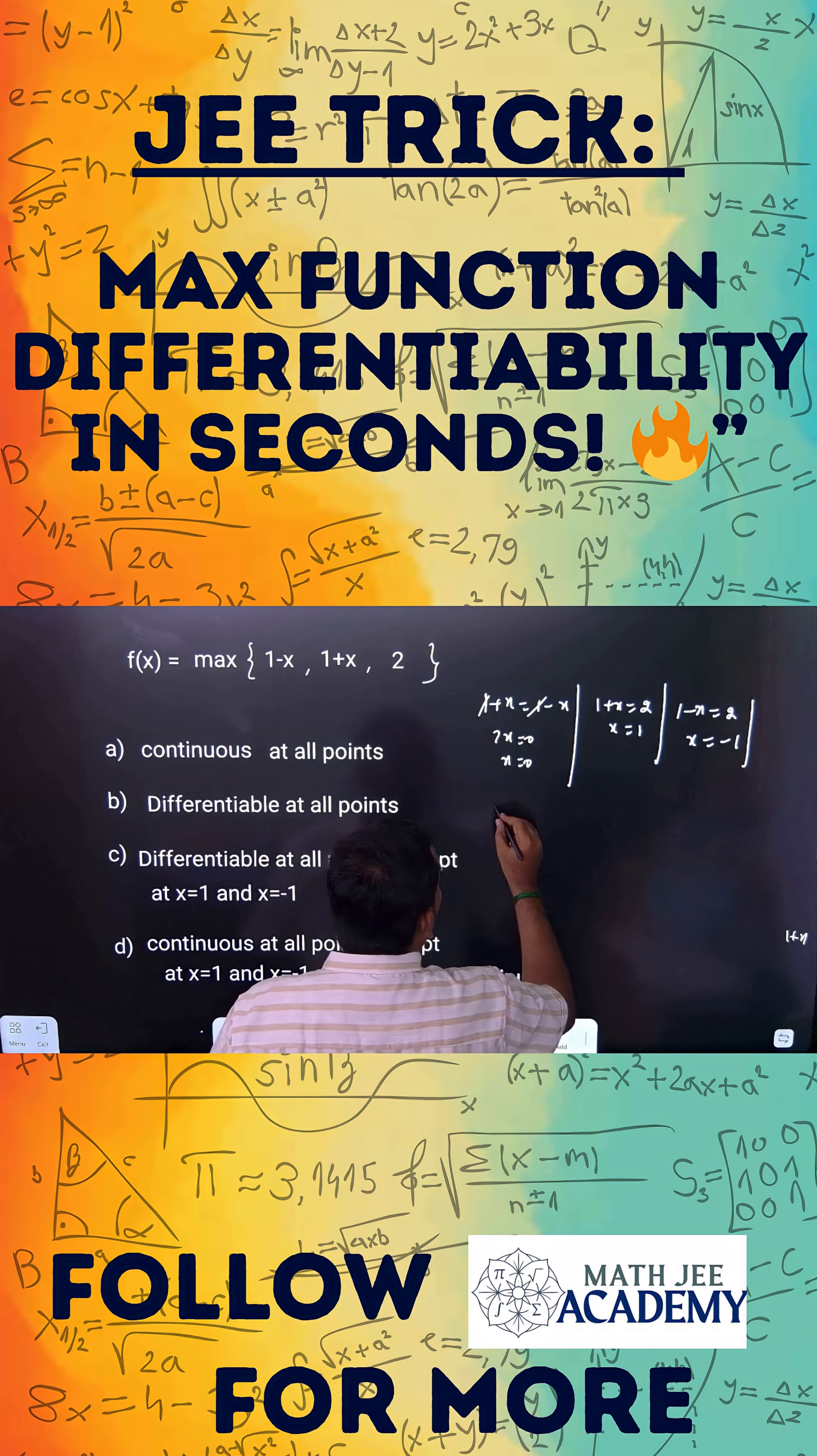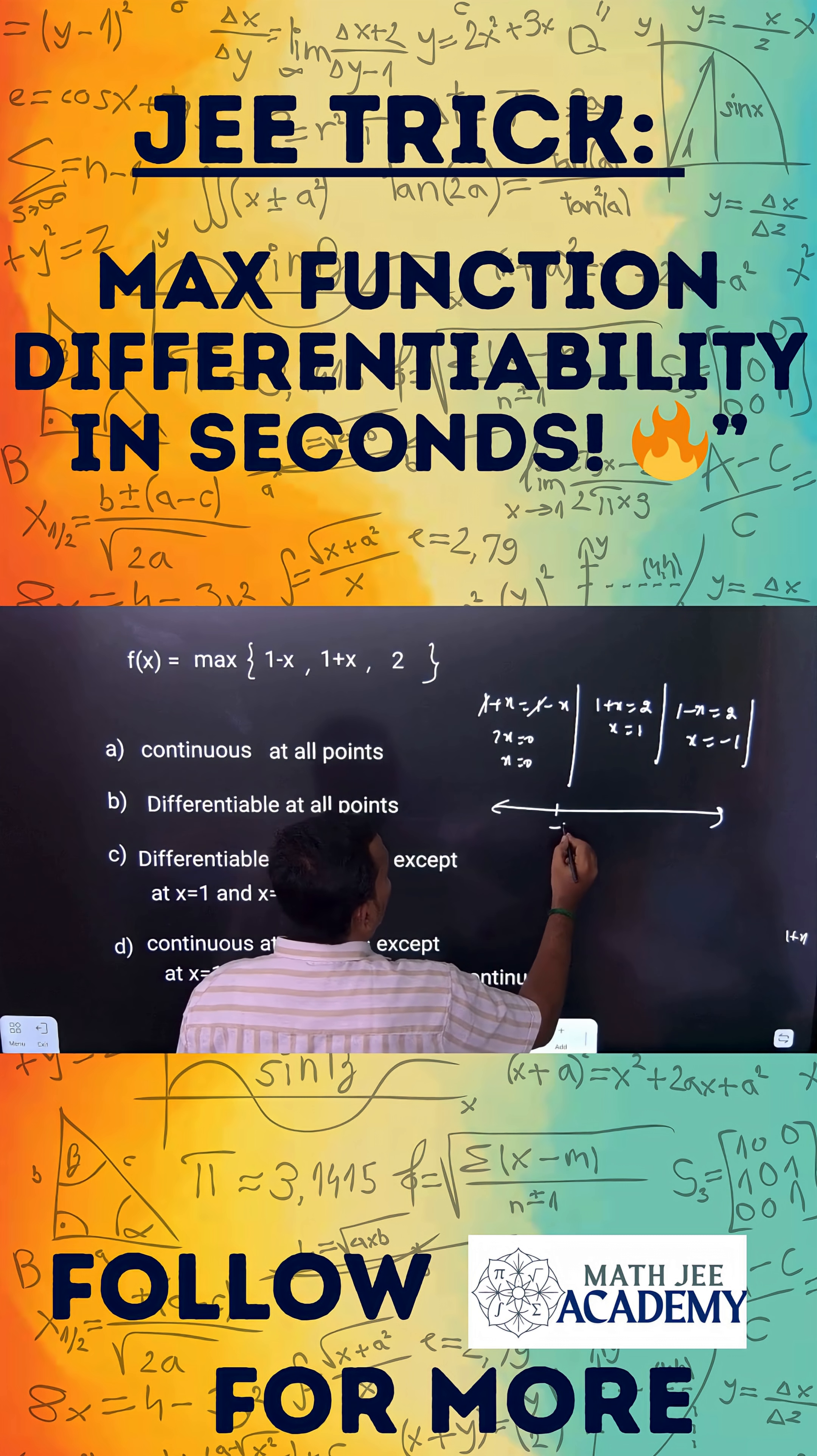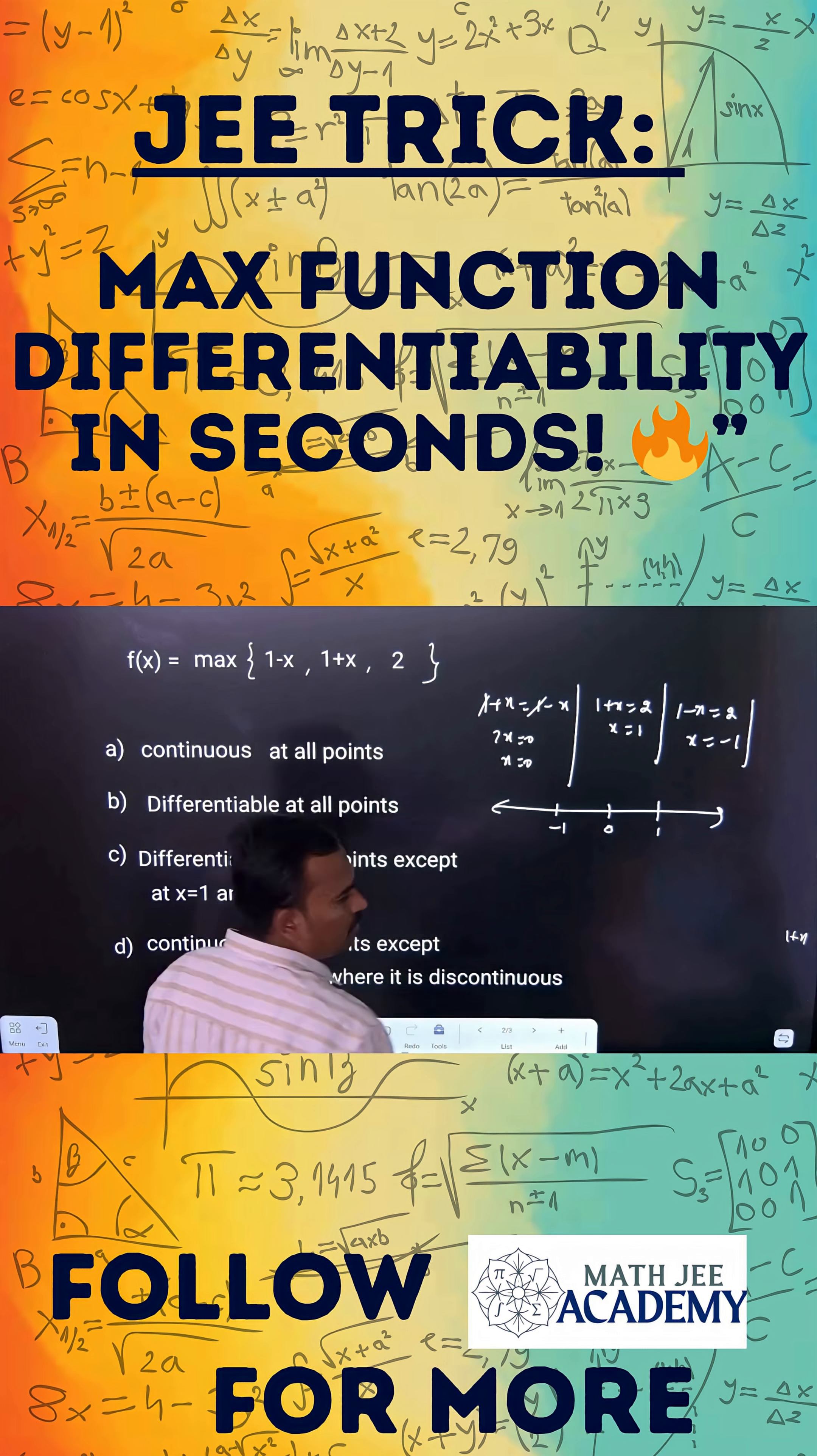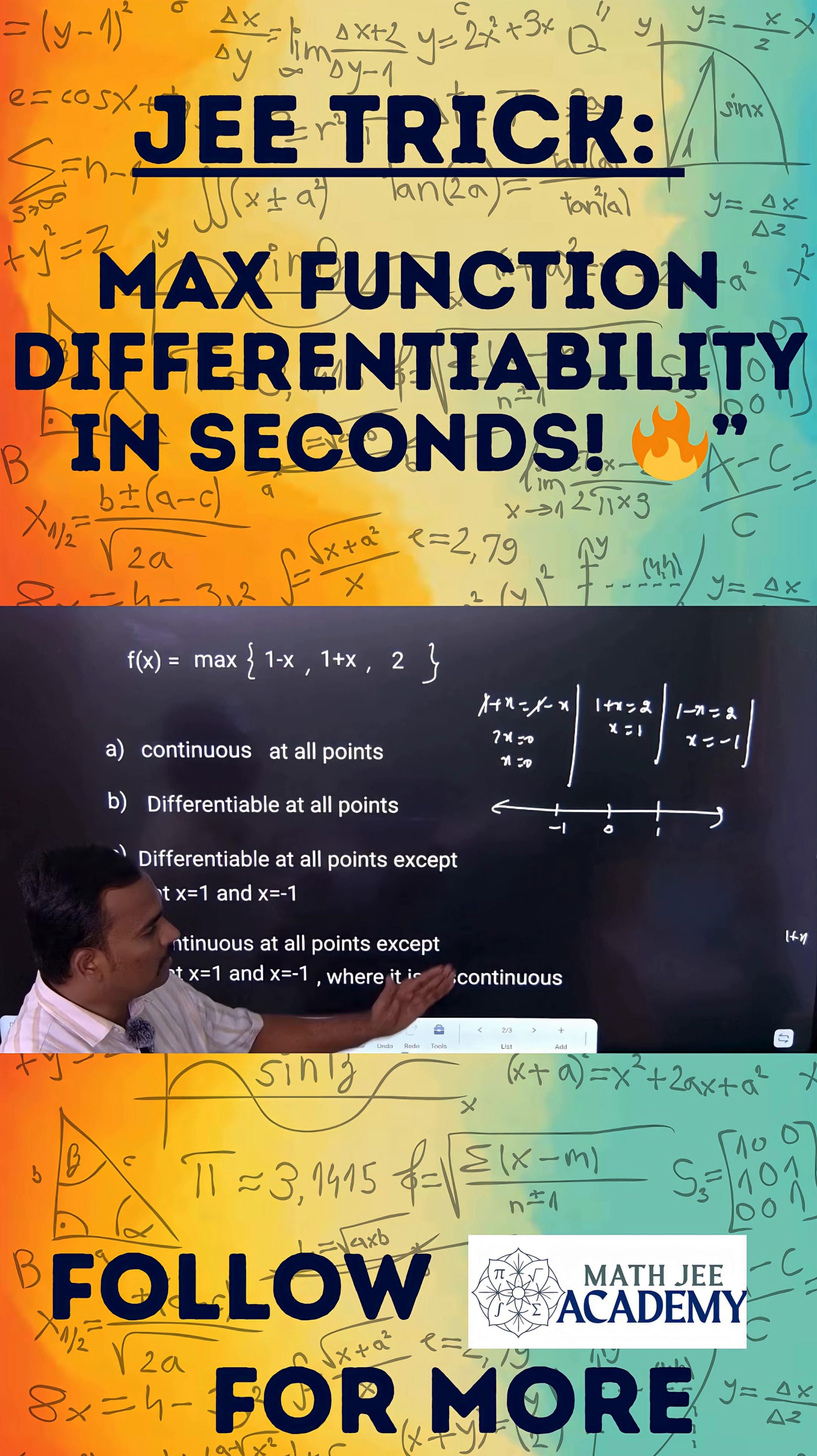So therefore, the breaking point here is what? Minus 1, 0, and 1. You have to check whole real number less than minus 1, minus 1 to 0, 0 to 1, more than 1.